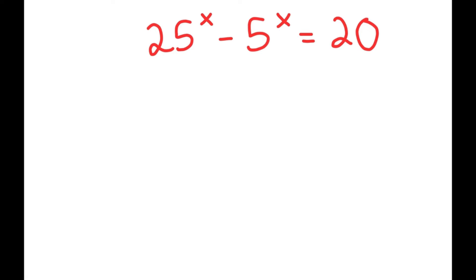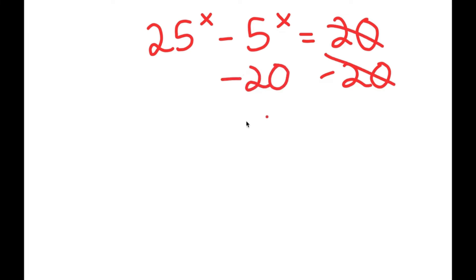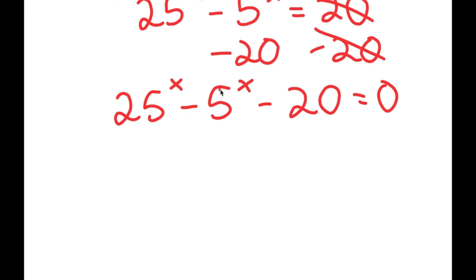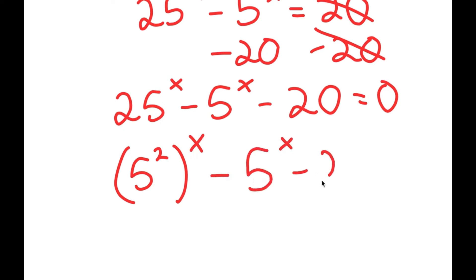To solve this equation, I'm going to first start by subtracting 20 on both sides. These two cancel out, and I get 25 to the power of x minus 5 to the power of x minus 20 is equal to 0. Now, I can rewrite 25 to the power of x as 5 squared to the power of x, so I have 5 squared to the power of x minus 5 to the power of x minus 20 equals 0.